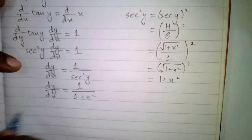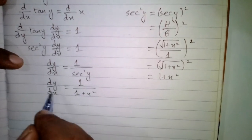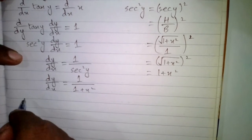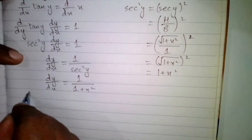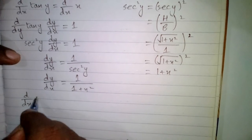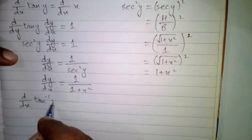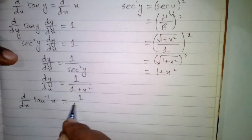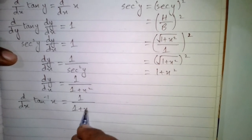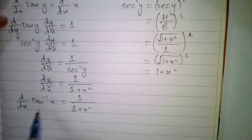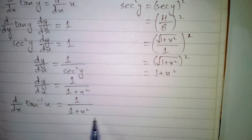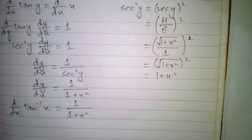Since we supposed y is equal to tan inverse x, we substitute to get d/dx of tan inverse x is equal to 1 upon 1 plus x squared. So the derivative of tan inverse x with respect to x is 1 upon 1 plus x squared.